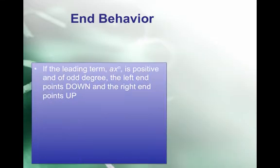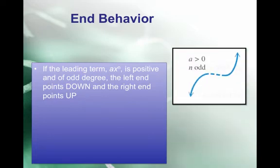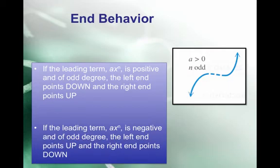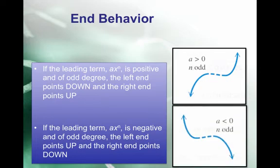When n is odd and the leading coefficient a is positive, it's the John Travolta: the right end points up, the left end points down. This looks like our standard x cubed or x to the 5th. When we have an odd degree and that leading coefficient becomes negative, the ends just flip: the left end points up and the right end points down.